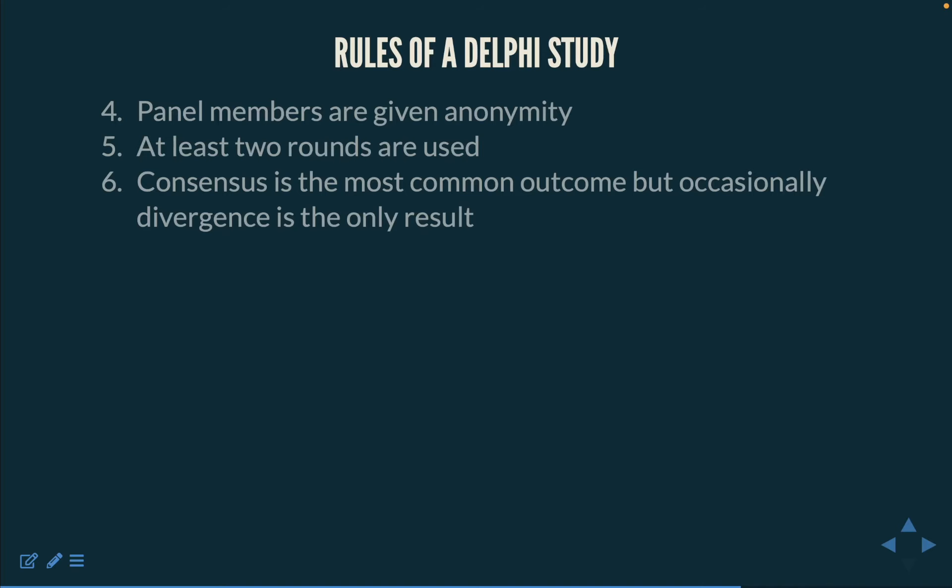At least two rounds are used. The purpose of a Delphi study is to reach consensus, meaning experts must be allowed to consider and reconsider their views in light of the views of others — this cannot be done in a single round. The researcher acts as both researcher and moderator, serving as a go-between as ideas are shared, modified, and debated. At least two rounds is the absolute minimum; three or more rounds are common, with the goal of giving the panel maximum opportunity to contribute their thoughts and ideas.